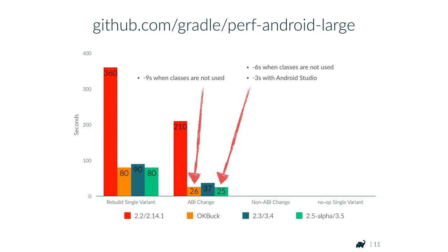For the non-ABI change scenario: 210 seconds with Android Plugin 2.2 (same as ABI change — it didn't matter), 17 seconds with Buck, 37 seconds with 2.3, and 8 seconds with 2.5 alpha — which is 26 times faster than with Gradle 2.2. An extremely fast build considering the size of the project. Once Gradle has ABI usage detection and incremental compile working with annotation processors, that will further improve performance for both scenarios.